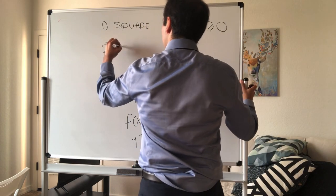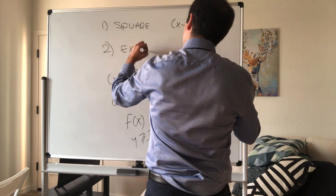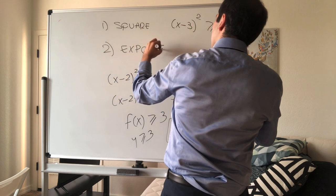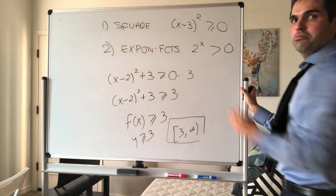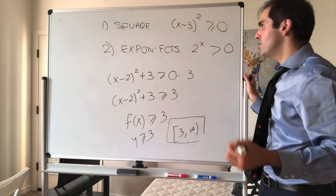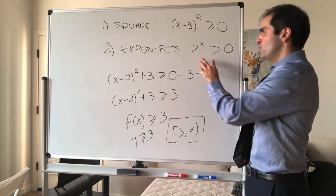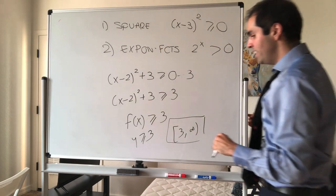But also for exponential functions, let's say you have 2 to the x, start with this being positive. So if I ask you the range of 2 to the x plus 3, you start with this, you add 3, and you get the range.